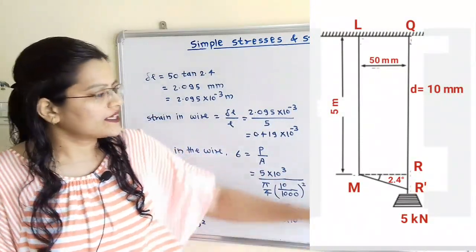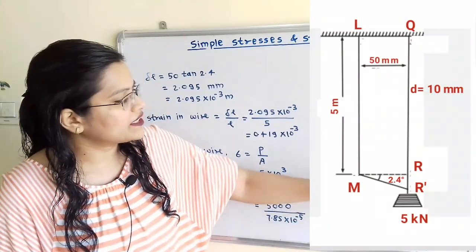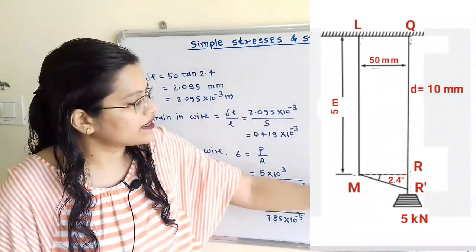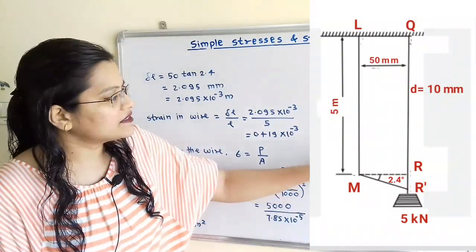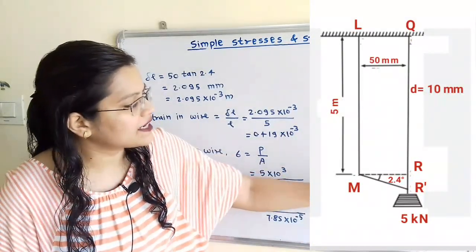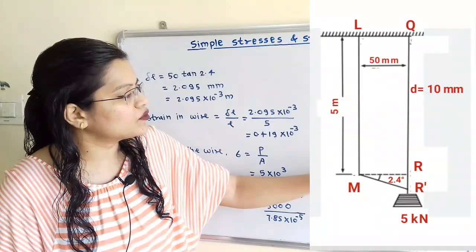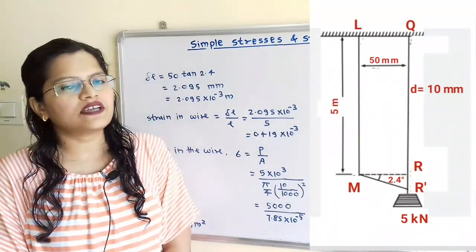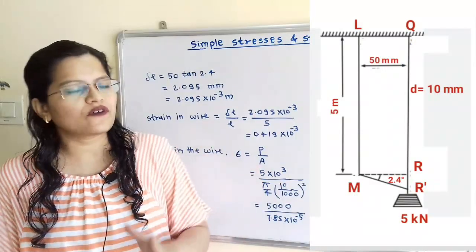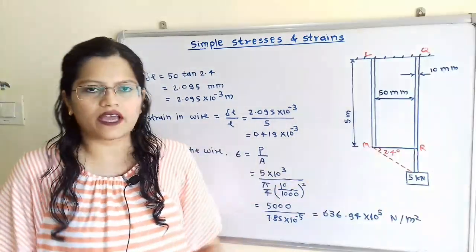Now when the load equal to 5 kN is attached to this bar, then there is deflection in the bar. And this horizontal bar is inclined at an angle equal to 2.4 degrees. And we have to find out the Young's modulus or modulus of elasticity for these wires.